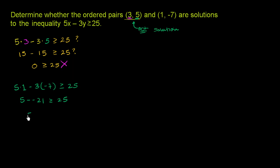This is the same thing as 5 plus 21. Subtracting a negative, same thing as adding the positive, is greater than or equal to 25. And 5 plus 21 is 26. Is indeed greater than or equal to 25. So this works out. So this is a solution.